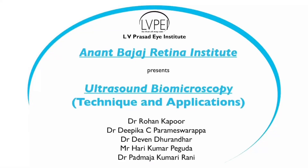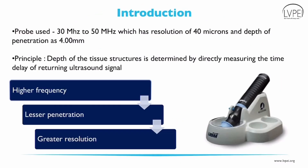Hello everyone. On behalf of Anant Bajaj Retina Institute, LVPI Hyderabad, we present to you the technique of Ultrasound Biomicroscopy in its application through various clinical cases. Ultrasound Biomicroscopy is a technique used to visualize the anterior segment with the help of a high frequency ultrasound transducer which has higher resolution but poorer penetration. The probe used in UBM has a frequency ranging from 30 to 50 MHz, which gives it a resolution of 40 microns in depth of penetration of 4 mm.